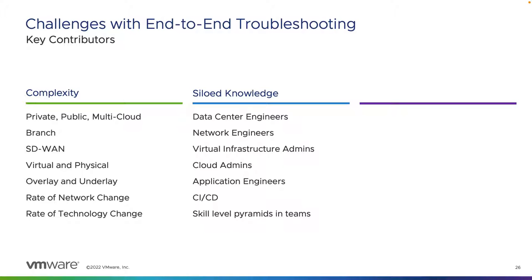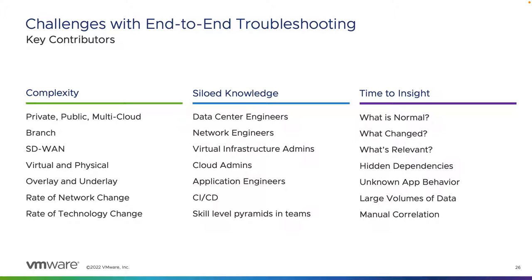Within each of these different teams, we often see a pyramid of skill levels — whether it be level one, level two, level three, or junior through senior engineers. This leads us to the final challenge area: time to insight. There's almost an unlimited amount of data available to operators, and in most cases we are left to manual correlation, which is time consuming and prone to human error. For example, how long does it take to answer fundamental questions such as: what is normal behavior, what changed around that time, what information is relevant to the task at hand, and how do I access it?